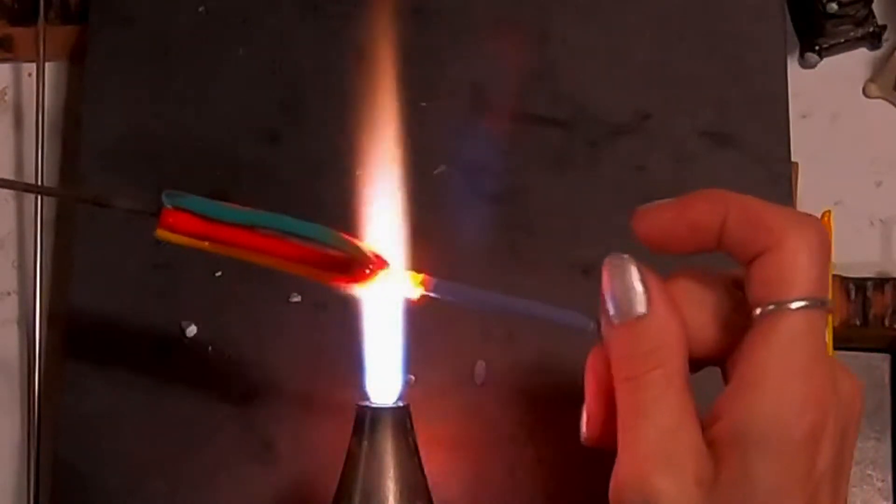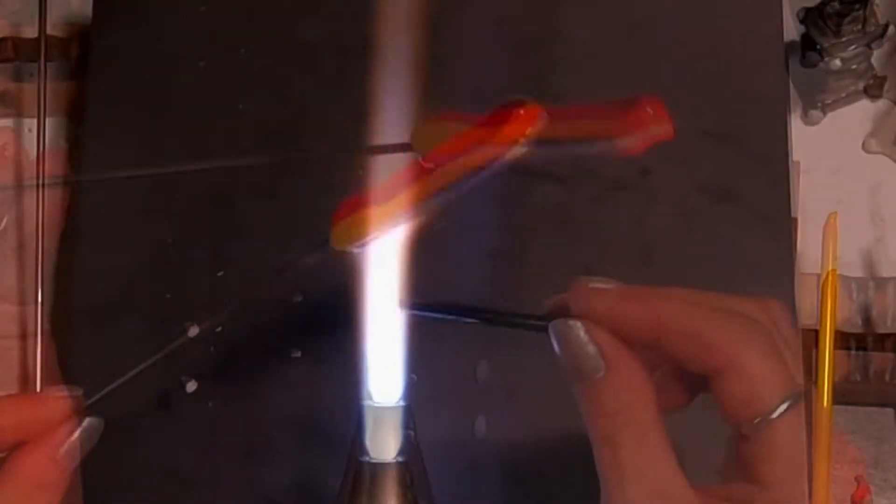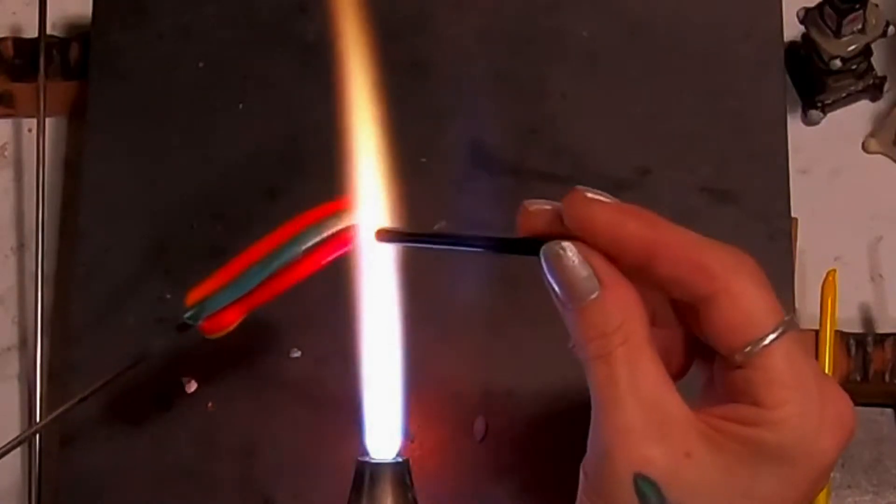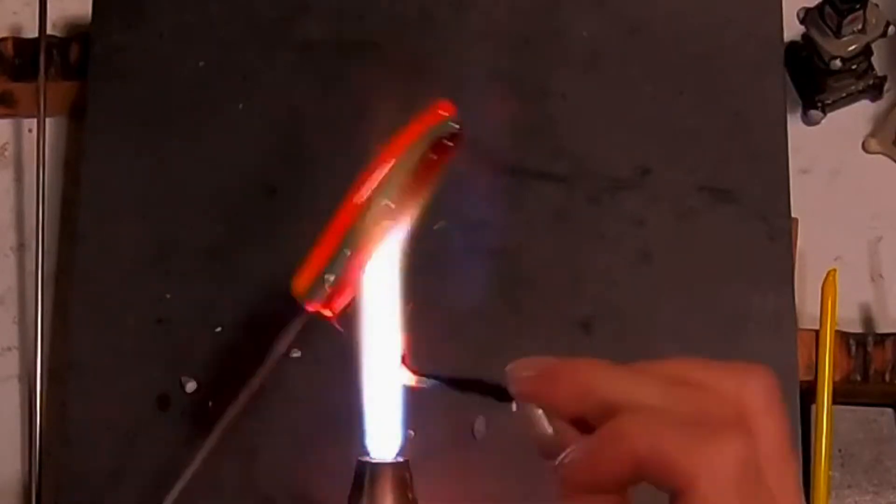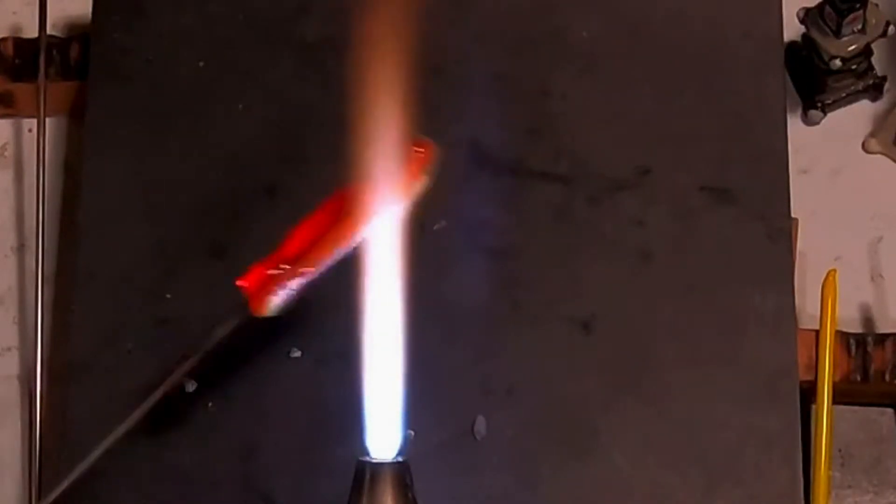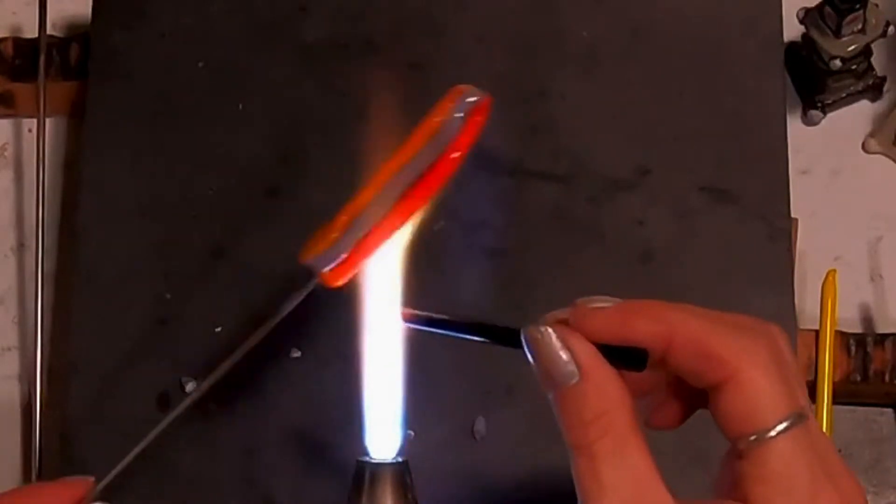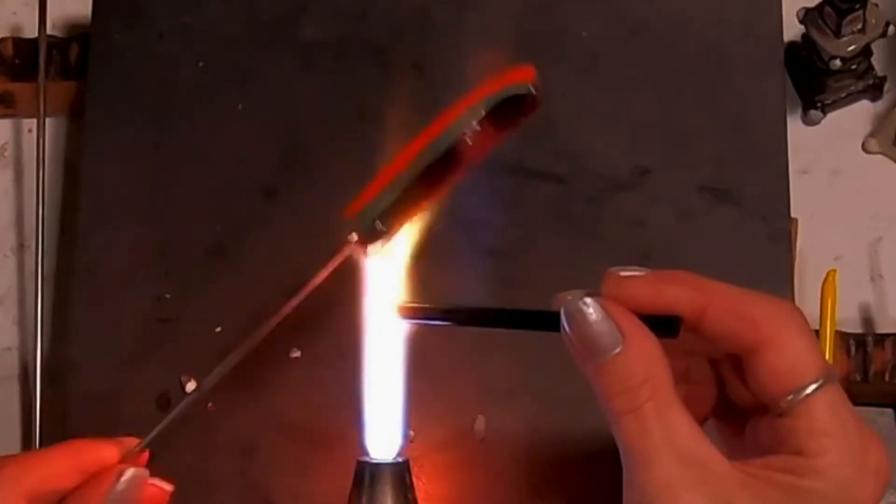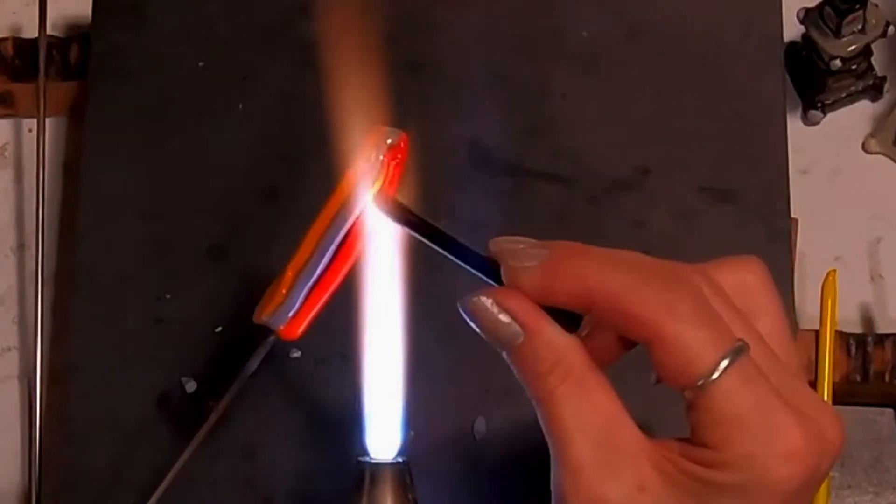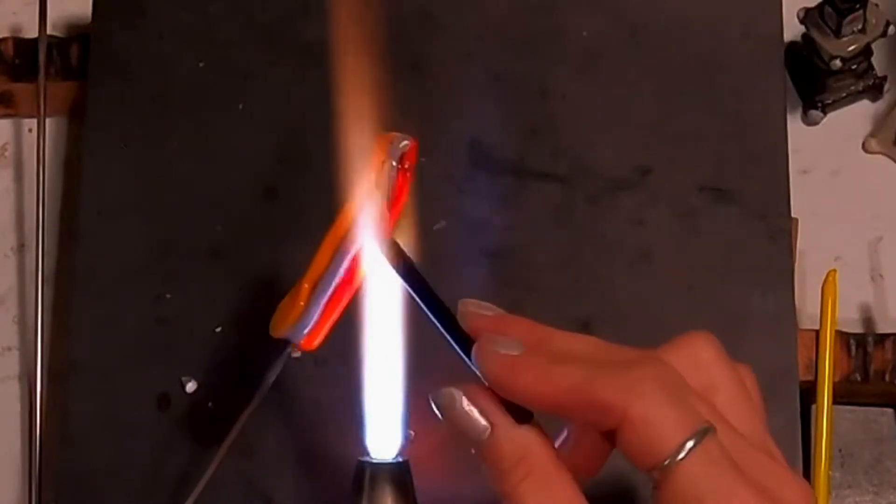There's some schmutz on there, so it started burning. Here, what I'm doing is I'm just adding a very small amount of black just to kind of set things off. I have no idea at this point what's going to be the outcome of this cane.